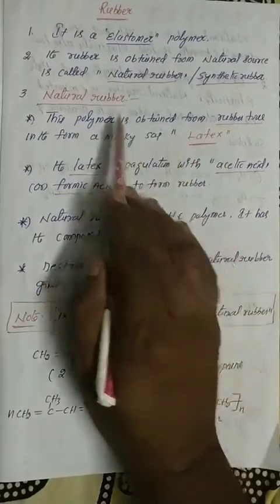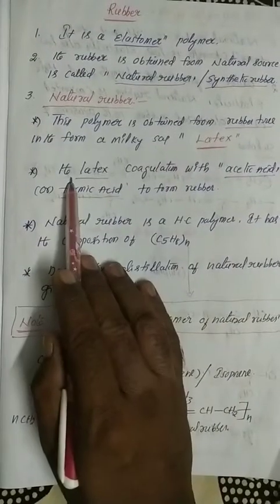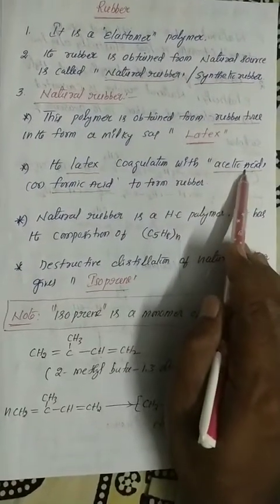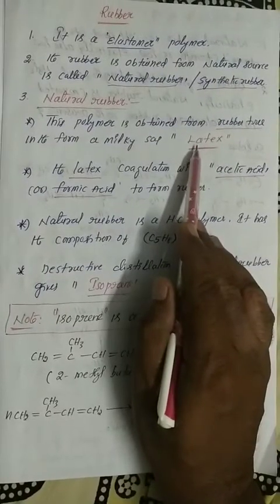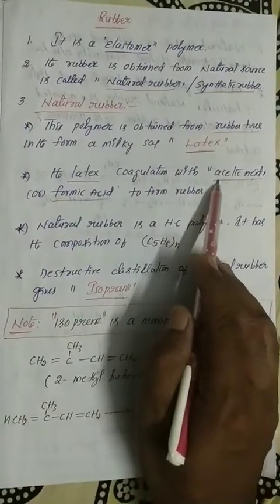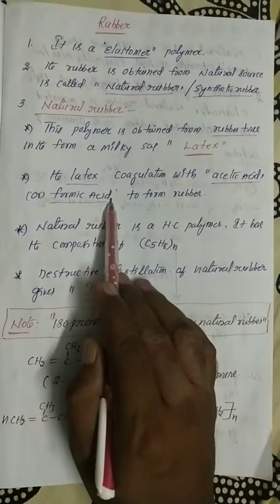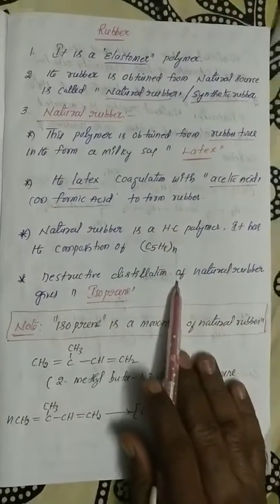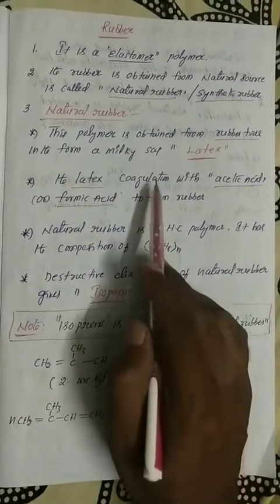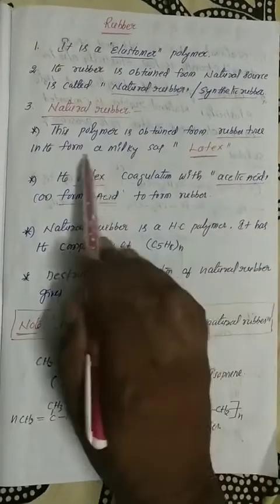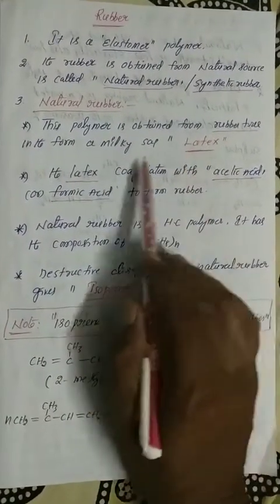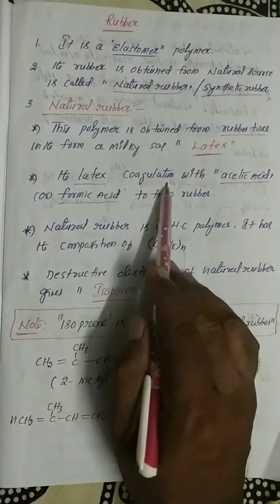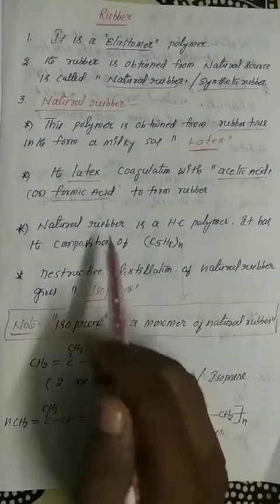From the latex, we prepare natural rubber. The latex is coagulated with either acetic acid or formic acid. First, you collect latex from the rubber tree, then immediately add either acetic acid or formic acid. The milk is coagulated, and hence you get rubber. This is the process for obtaining natural rubber from nature.